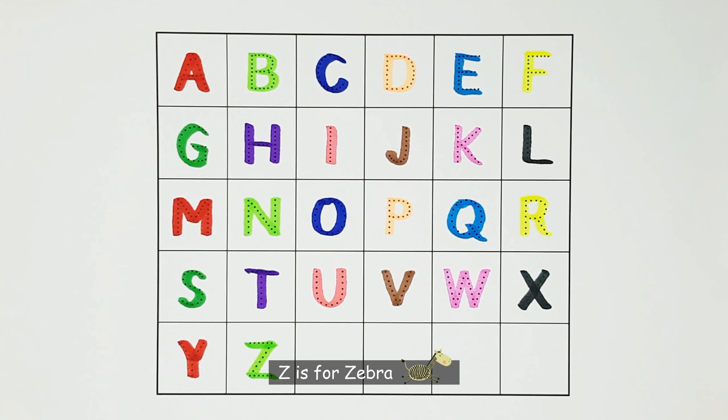X. X is for zaris. X. Y. Y is for yak. Y.